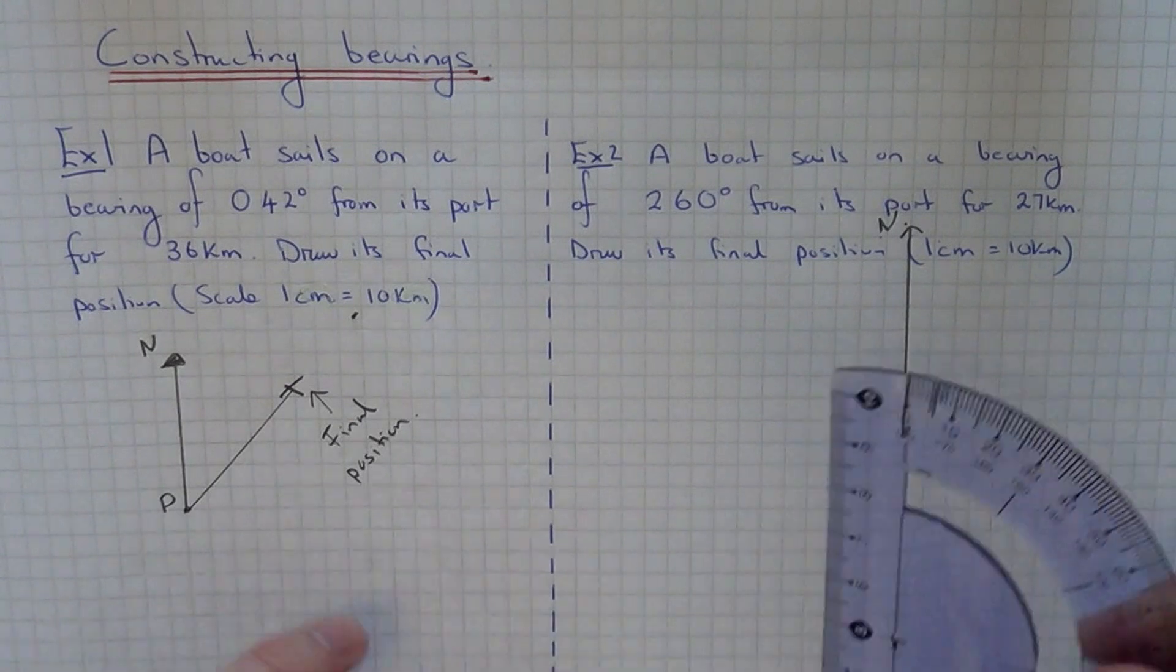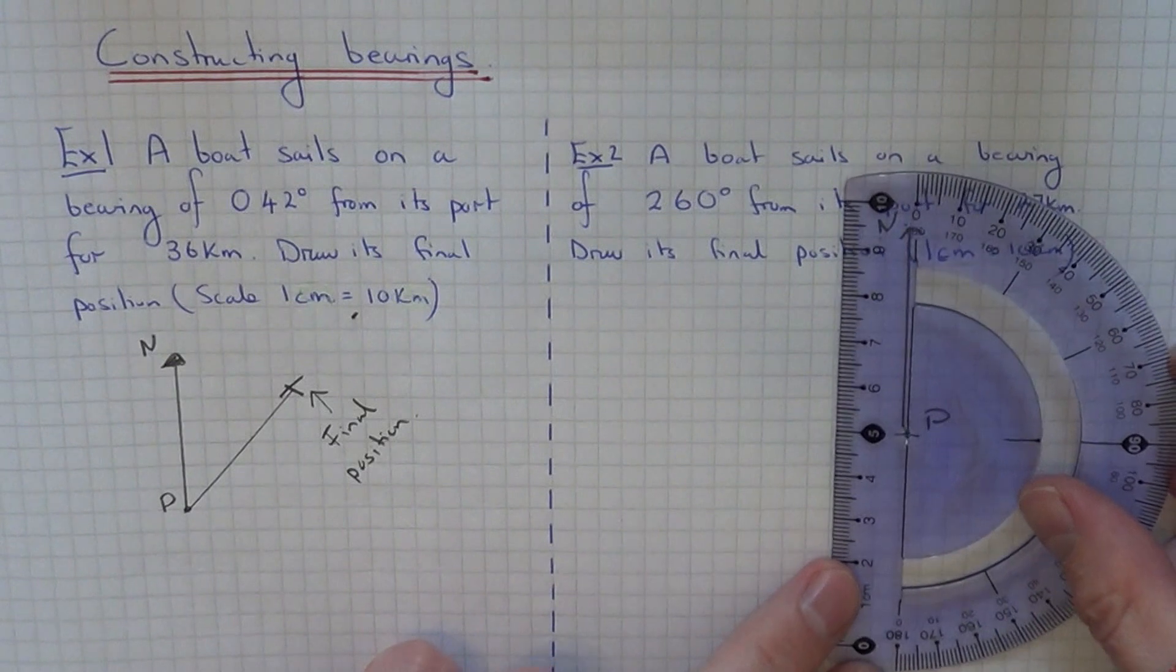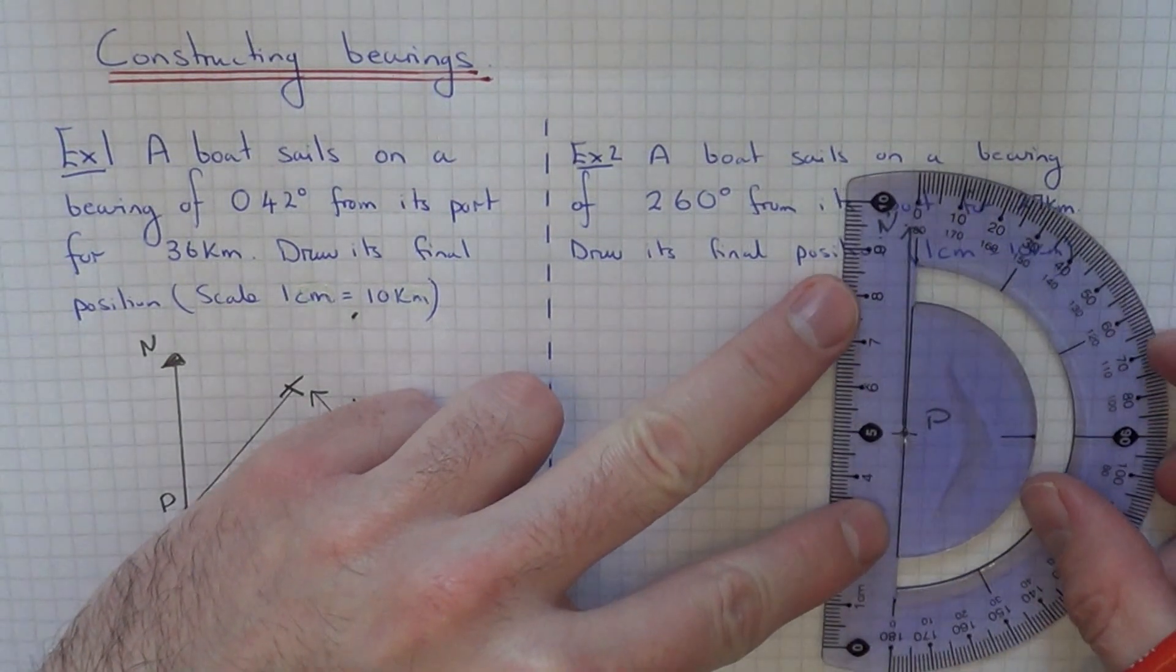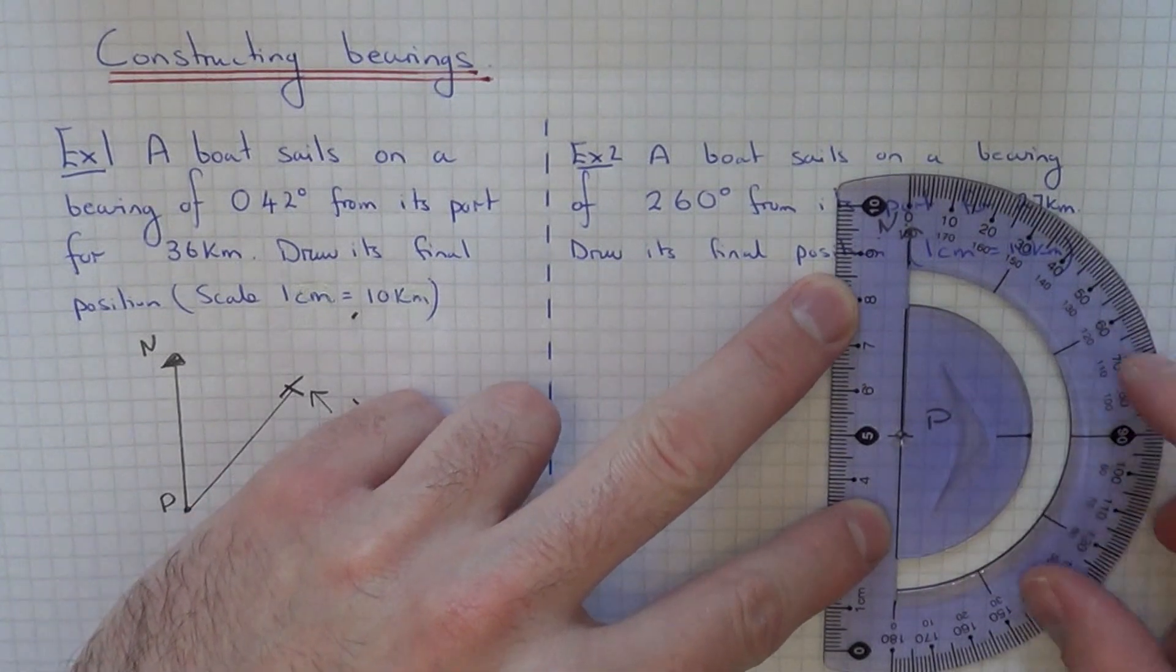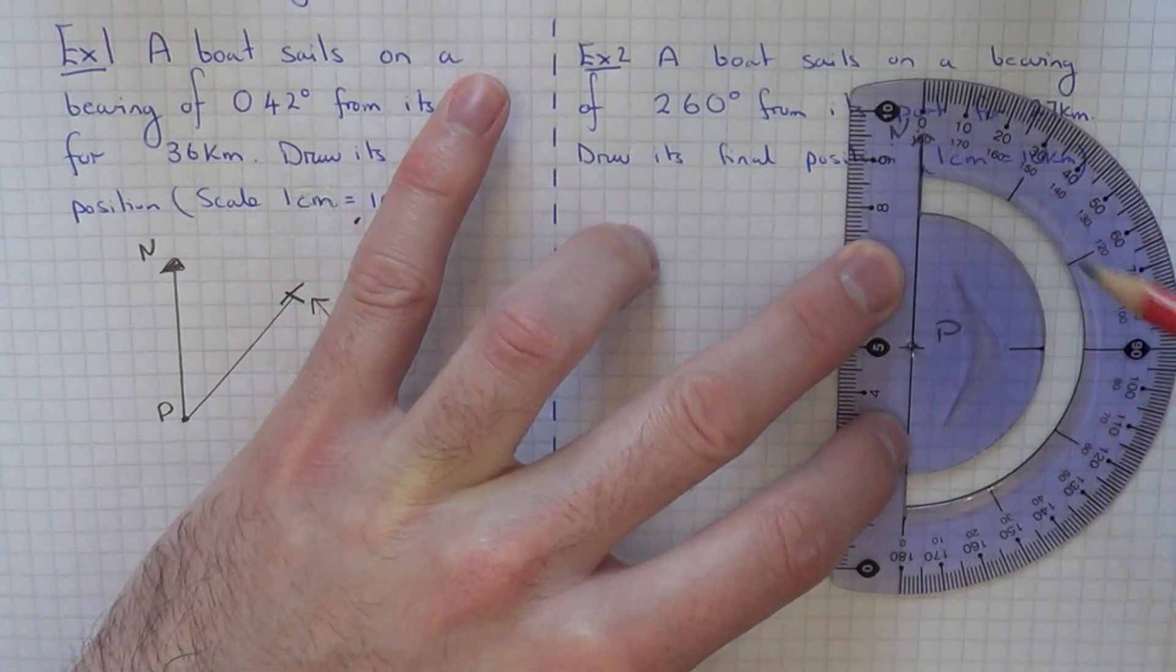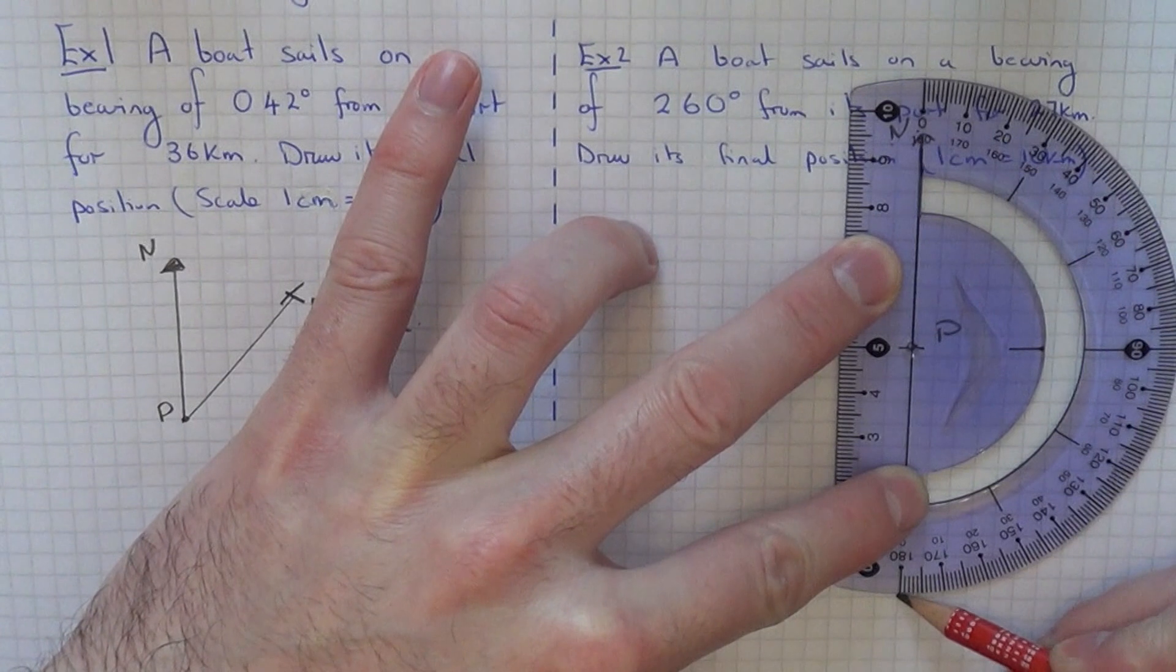If you've just got a normal protractor which goes to 180, it's a little bit harder to do. If you've got a 360 degree protractor, then you'll find that much easier. We know all the way, halfway around is 180, so put a little marker here.